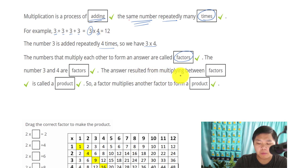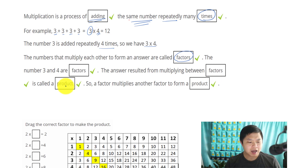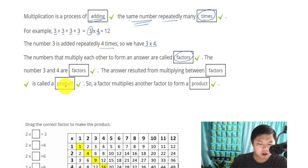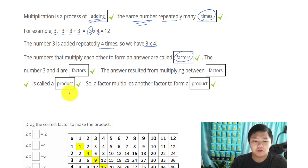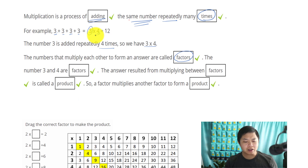The answer resulting from multiplying between factors — in this case 3 and 4 — is called the product. So what is the product between 3 and 4? It's 12. Can you give me an example of 2 factors that give us a product of 12? 3 and 4. A factor multiplied by another factor forms a product. Can we have more than 2 factors? Yes, you can multiply multiple numbers, and you'll learn that in later math classes.